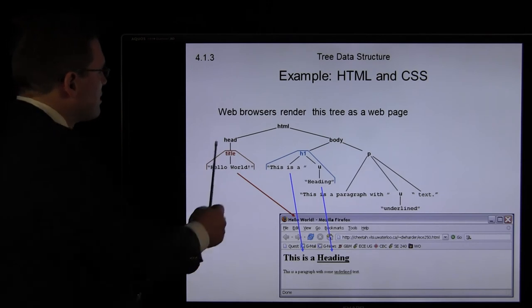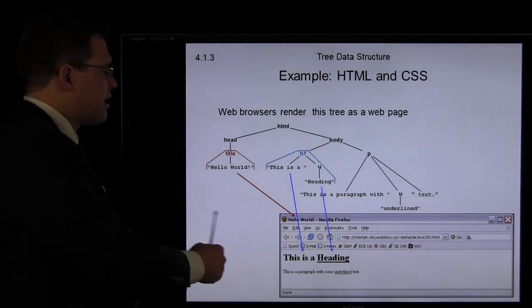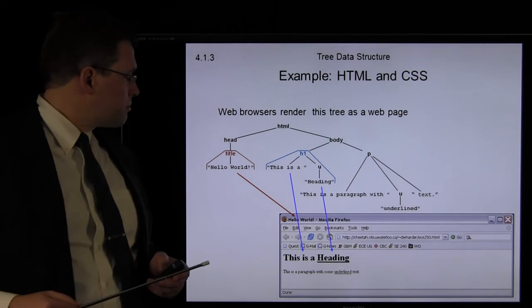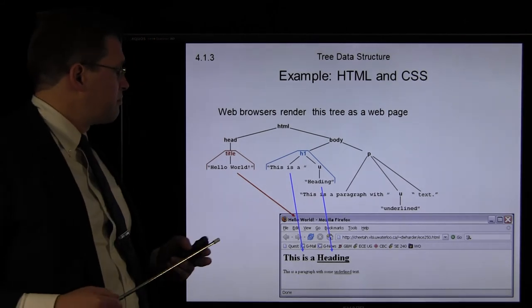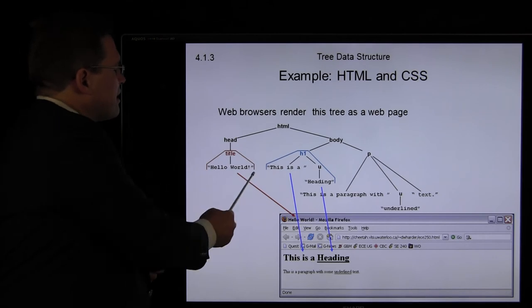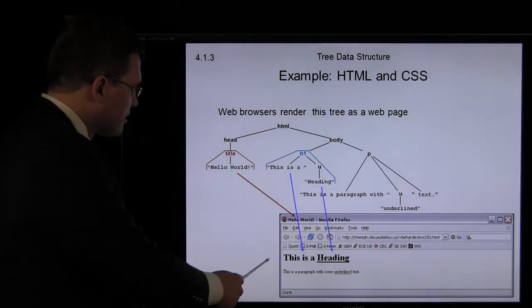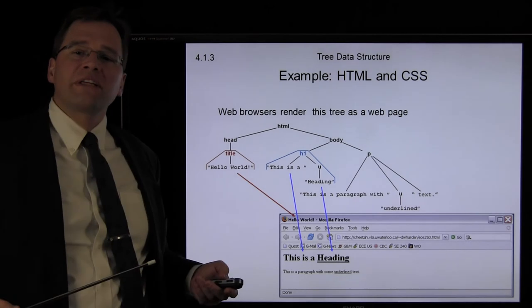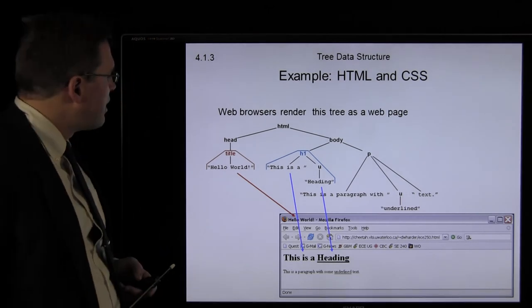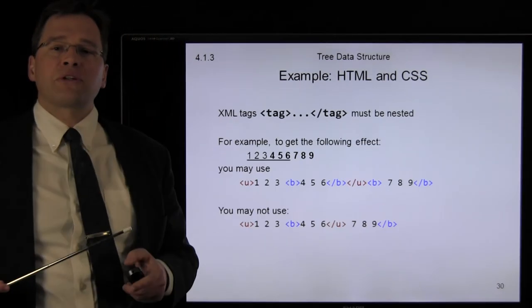The web browser takes this and says: we have a head here, we have a title within the head that's displayed in the title bar. Everything that is a descendant of the H1 tag is displayed as a heading of a particular size. Anything that is a descendant of underlining is underlined within the browser.